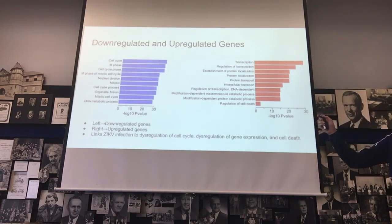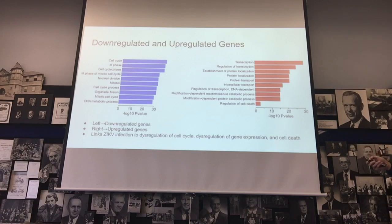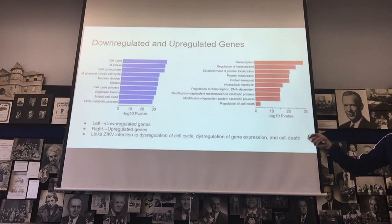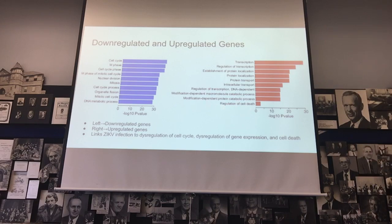They also performed RNA sequencing to identify which genes were up-regulated and down-regulated due to infection. Down-regulated genes were mainly associated with cell cycle progression, while up-regulated genes were involved with transcription and regulation of cell death. This shows that Zika infection dysregulates the cell cycle — HNPCs aren't differentiating into neurons properly — dysregulates gene expression, and increases cell death. Fewer HNPCs means fewer neurons, which would result in a smaller brain.